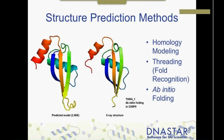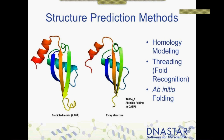Structure prediction is so important because of the huge discrepancy between the number of known sequence entries in GenBank compared to known protein structures in PDB. These programs allow us to work with proteins that cannot or have not yet been crystallized. There are three major structure prediction methods: homology modeling, which uses a solved homologous structure and is successful for about a third of all proteins; threading or fold recognition, used for harder problems, successful for about 50% of proteins; and ab initio folding for the most difficult cases, working best for small proteins of about 100 residues.